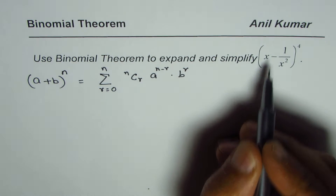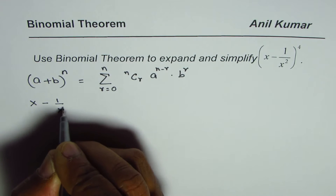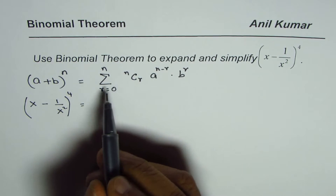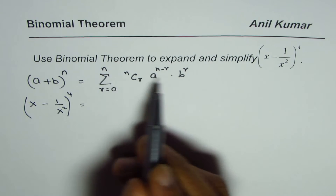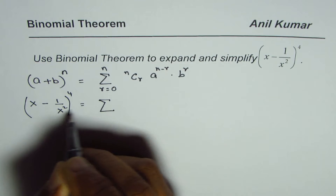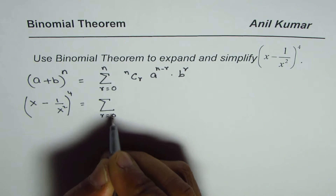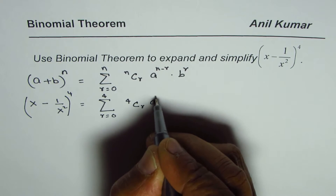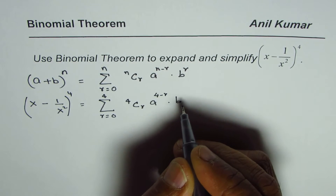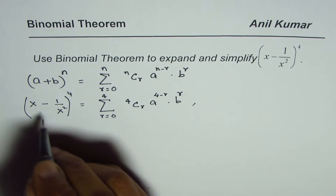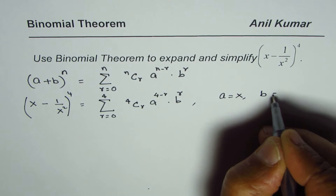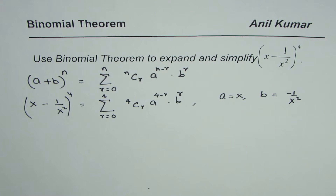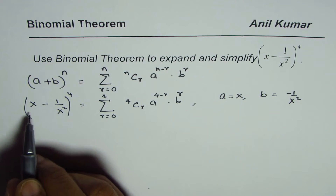What we are given here is (x minus 1 over x squared) to the power of 4. So in our case n is 4. Since n is 4, I could write it in expanded form or in sigma notation. In sigma notation, n is 4 and r goes from 0 to 4, giving us 4Cr times a to the power of (4 minus r) times b to the power of r. Here a is x and b is minus 1 over x squared.